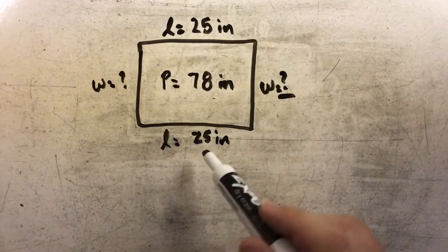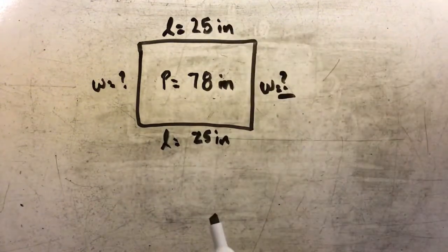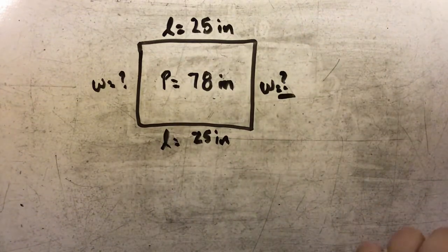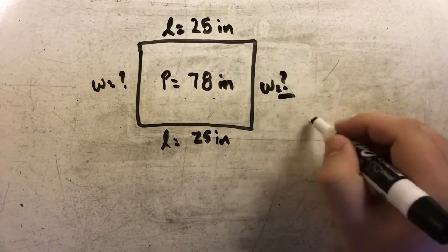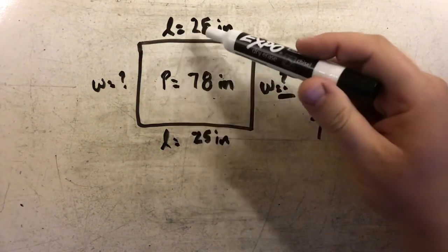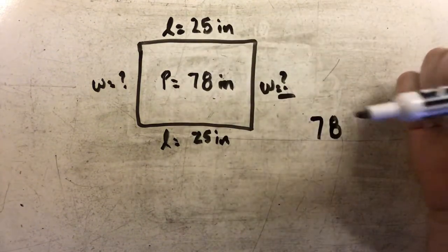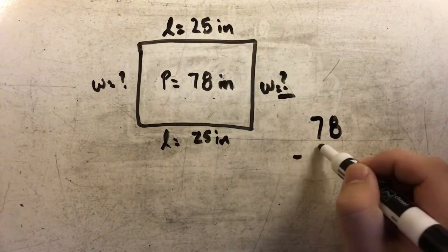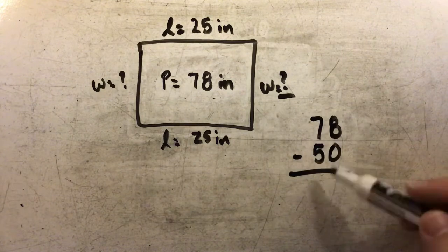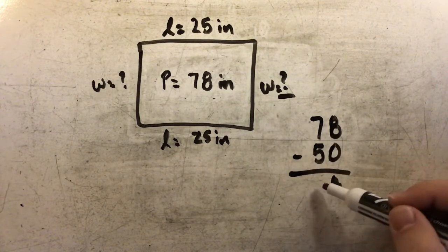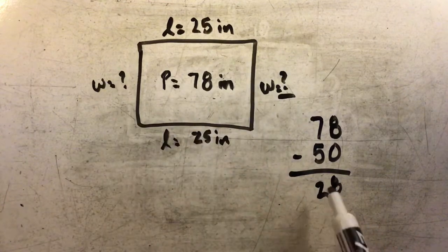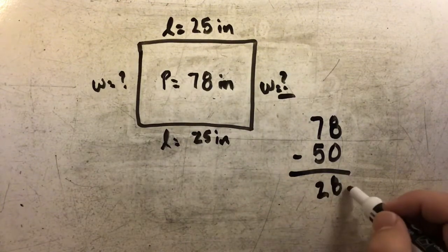The first thing I'm going to do is take both of my known side lengths and subtract them from the perimeter. So I have 78 inches, and if I subtract 25 and 25, I'm subtracting 50 inches off of the perimeter. 8 minus 0 is 8, and 7 minus 5 is 2. So I know that the remaining two lengths have to equal 28 inches.